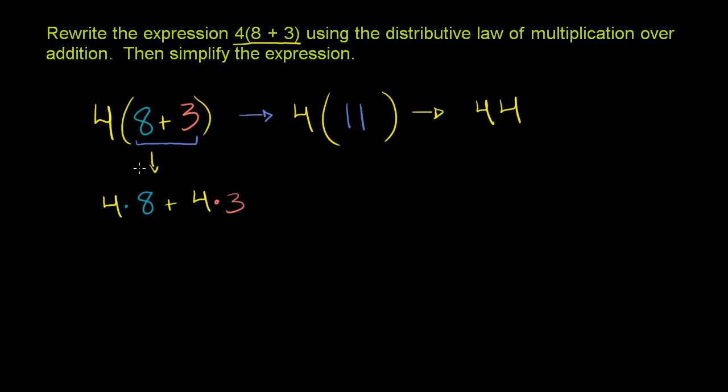A lot of people's first instinct is just to multiply the 4 times the 8. But no, you have to distribute the 4. You have to multiply it times the 8 and times the 3. This is the distributive property in action.